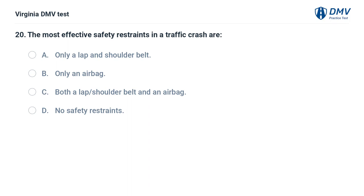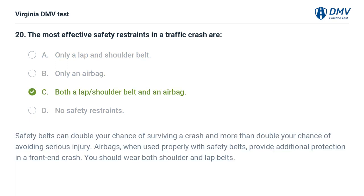The most effective safety restraints in a traffic crash are: A. Only a lap and shoulder belt, B. Only an airbag, C. Both a lap, shoulder belt and an airbag, D. No safety restraints. Safety belts can double your chance of surviving a crash and more than double your chance of avoiding serious injury. Airbags, when used properly with safety belts, provide additional protection in a front-end crash. You should wear both shoulder and lap belts.